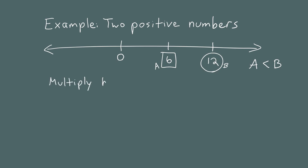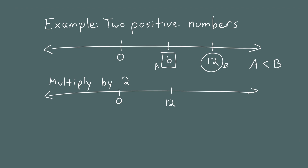Let's see what happens if we multiply these numbers by 2. If we multiply A by 2 — multiply 6 by 2 — we get 12. And if we double 12, we get 24. I'll draw a square around the first number and a circle around the second. Once again, A is less than B, because even though we've changed the numbers and doubled them both, the order is preserved. A was less than B before, and after multiplying by the same positive number, A is still less than B.